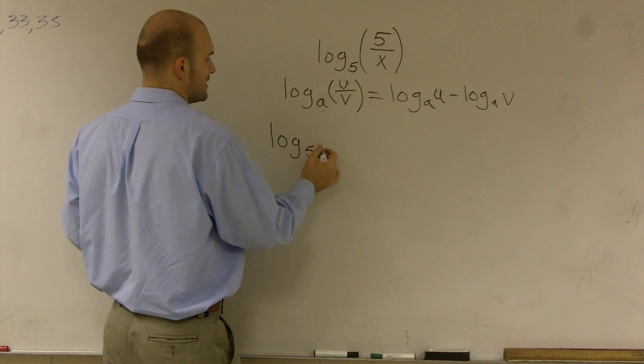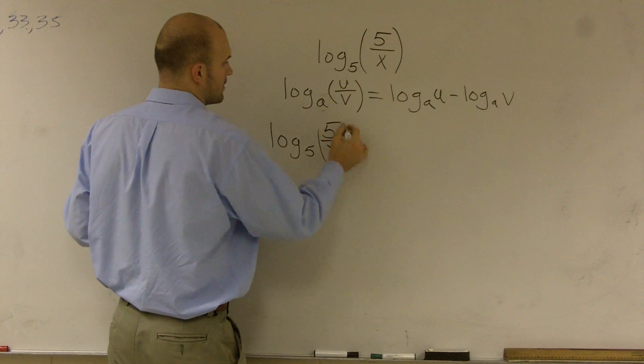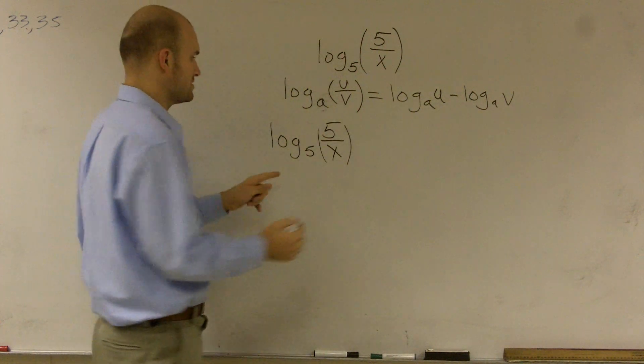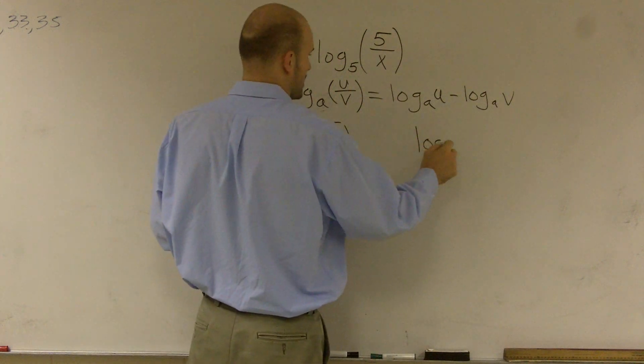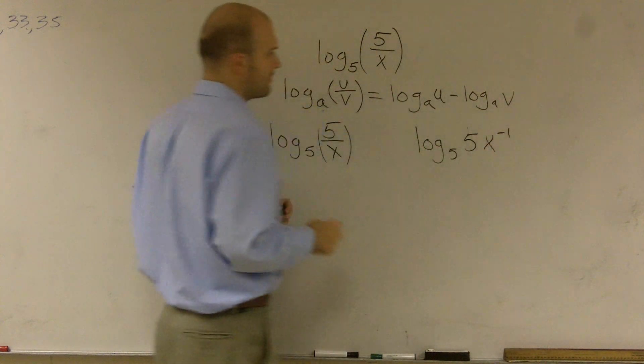One way is you guys can write your problem as 5 over x. Also, it's very common to write our expression as log base 5 of 5 times x to the negative first power.